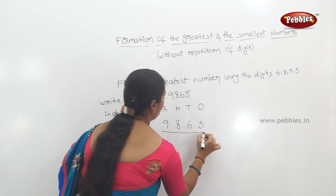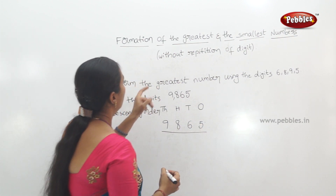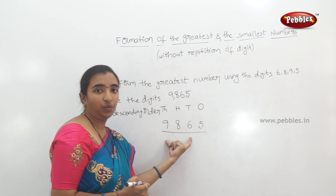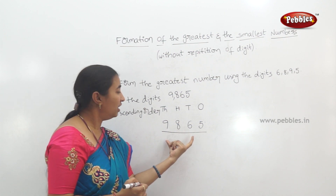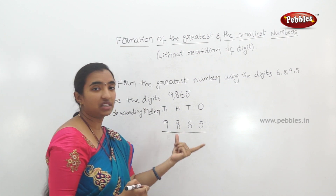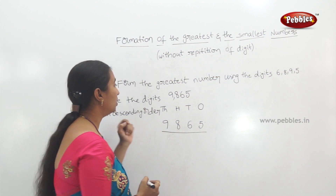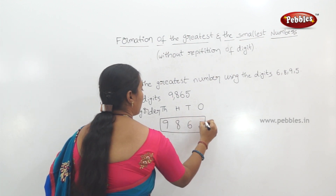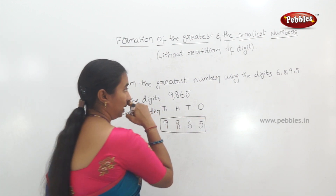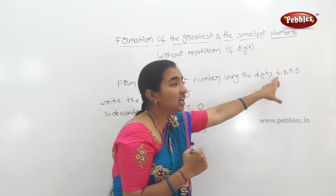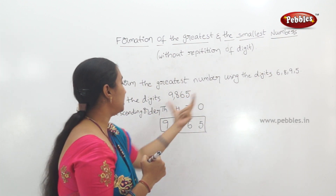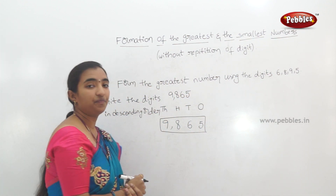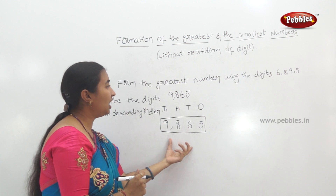This is without repetition of digit — we don't have a repeat of any digit. The greatest number using these 4 digits is 9,865. This is the answer.